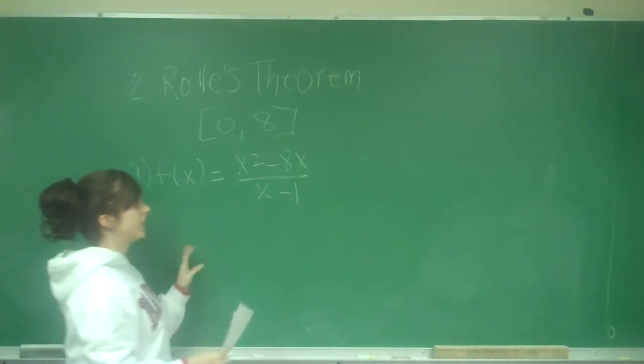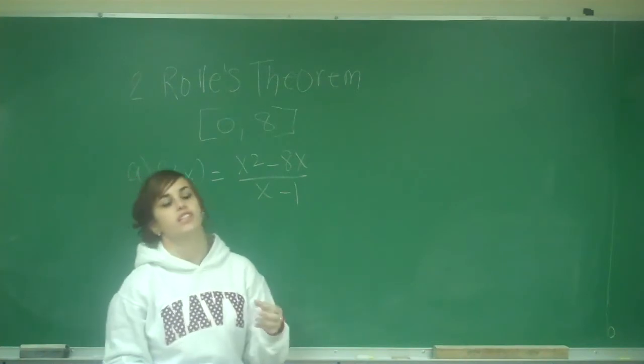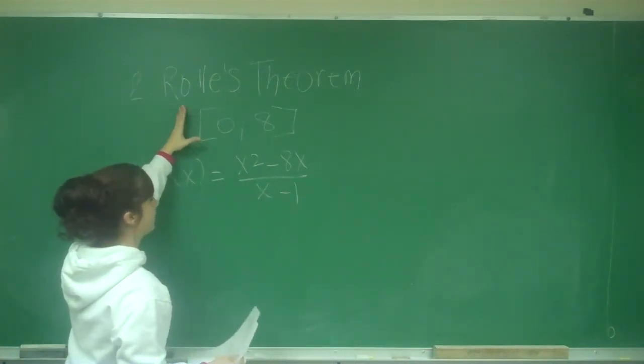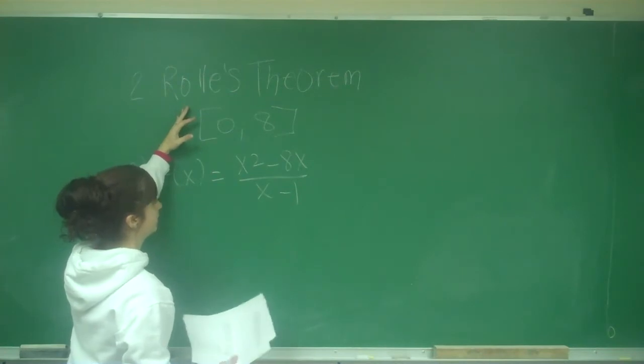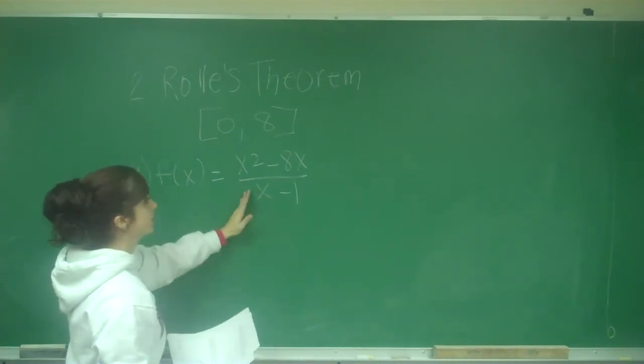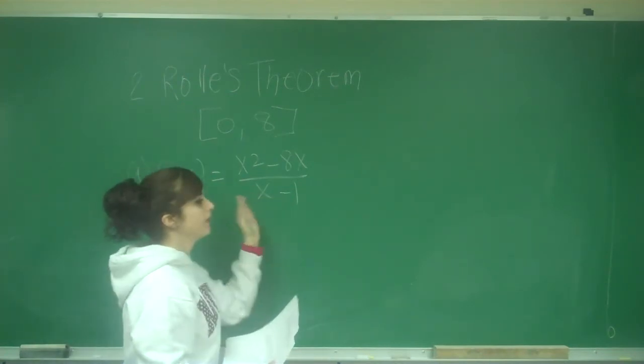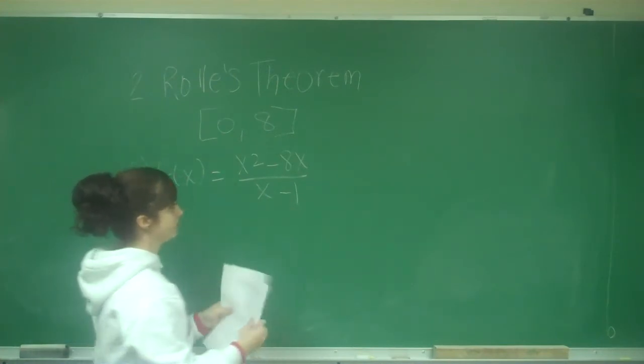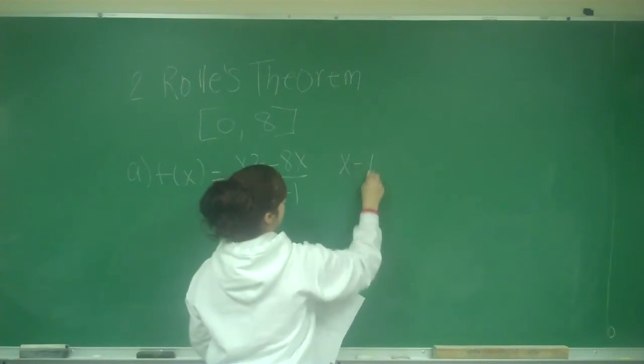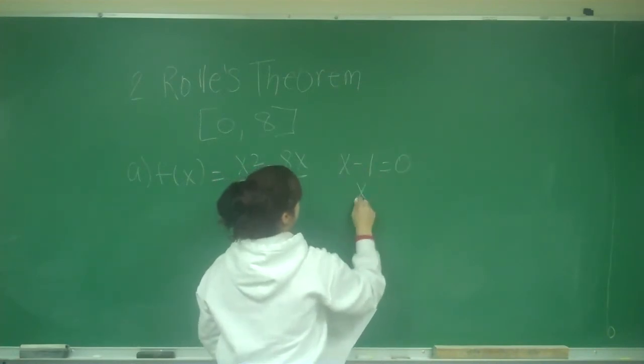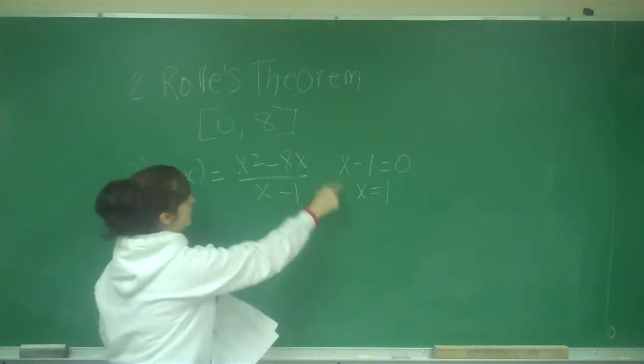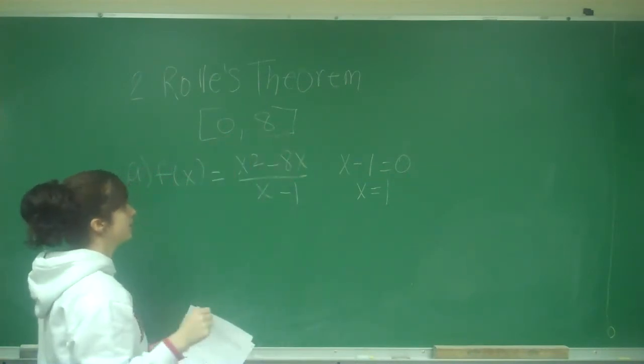So for Rolle's theorem, it says that our function has to be continuous and differentiable on this interval in order for there to be a C value that exists. For this not to be continuous would be where we have some vertical asymptotes, and that's where my denominator is 0. So when x minus 1 equals 0, x equals 1.